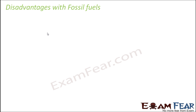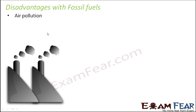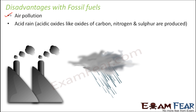Even though fossil fuels are a great source of energy, there are certain disadvantages associated with them. One is air pollution — burning fossil fuels causes a lot of pollution and releases harmful gases like carbon monoxide. It also results in harmful substances that remain in the atmosphere and combine with normal rain to produce acid rain. This acid rain contains several acidic oxides like carbon oxides, nitrogen oxides, and sulfur dioxide.